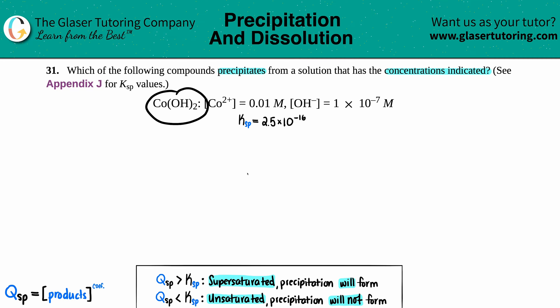They told us that the cobalt concentration is 0.01 molarity and the hydroxide OH- concentration is 1×10^-7 M. From these two molarities, we have to find out if this compound will precipitate.